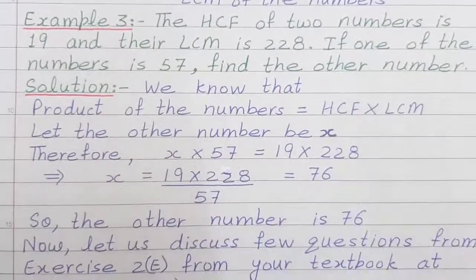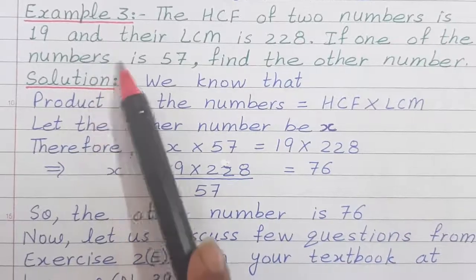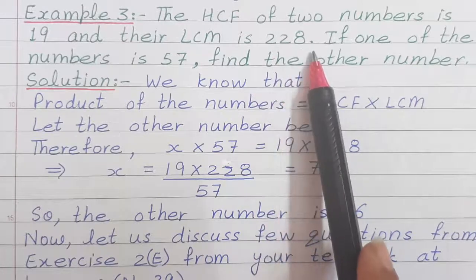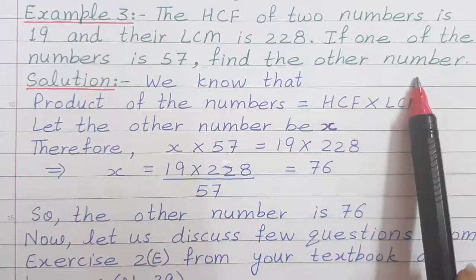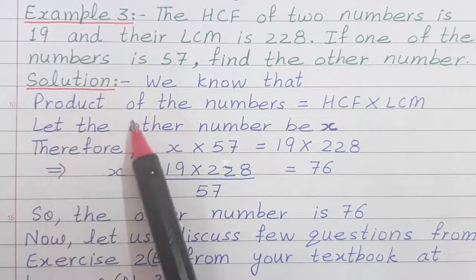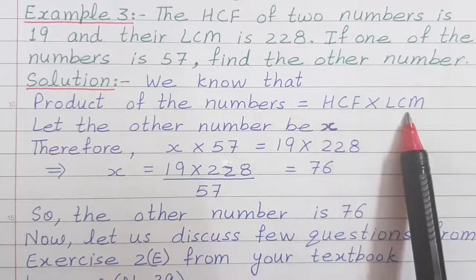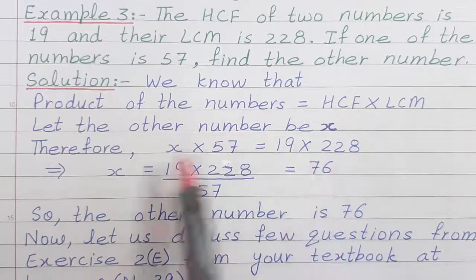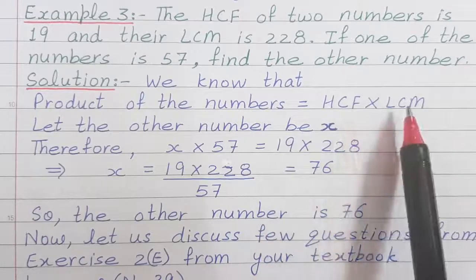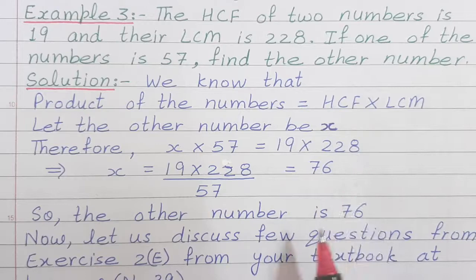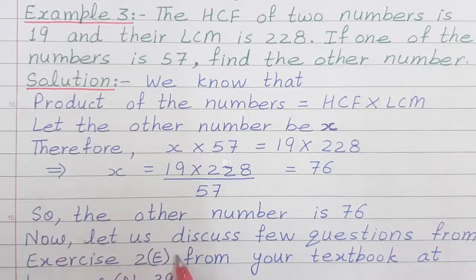Now children, let us discuss an example. Example number 3 here is: the HCF of 2 numbers is 19 and their LCM is 228. If one of the number is 57, find the other number. So, here we know that product of the numbers, that is first number into second number is equal to product of HCF and LCM. So, let the number be X. Therefore, X multiplied by 57 is equal to HCF 19 multiplied by LCM, which is 228. So, after the calculation, answer is 76. So, the number is 76.